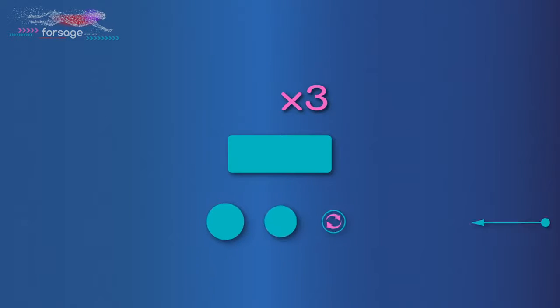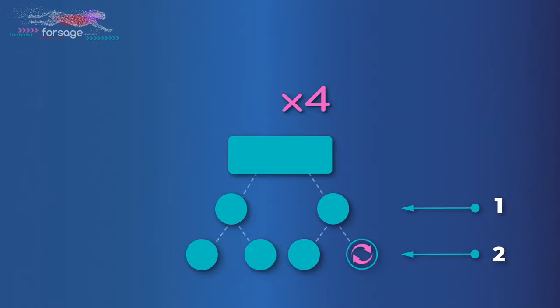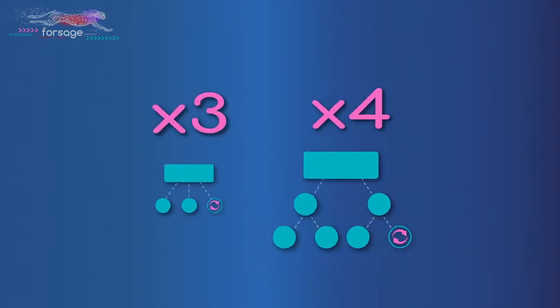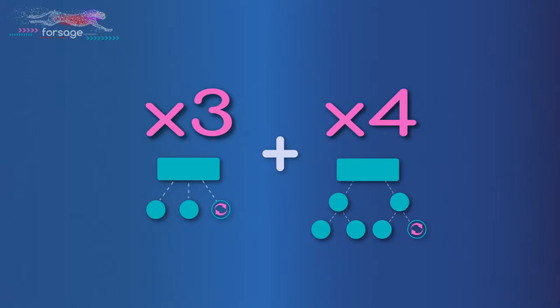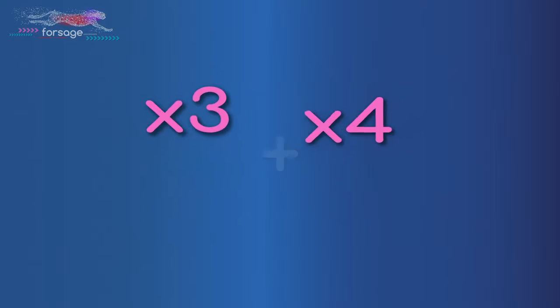In the X3 program below you is one line with three places. In the X4 program below you are two lines. Two places in the first line and four places in the second. When you register in Forsage, you open both programs simultaneously.